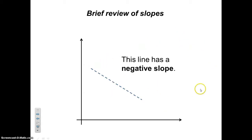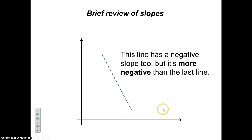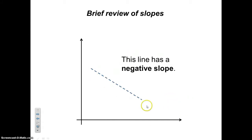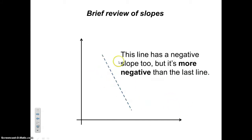This is a negative slope — we know that because it's going down. It's also constant because we have a straight line. Here's another line with a negative slope that is constant, but this negative slope is more negative than the last one. So if this is negative 5, this is something more negative, like negative 10.